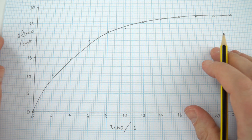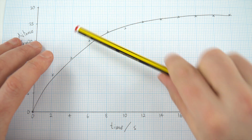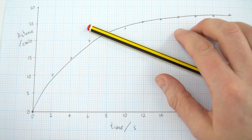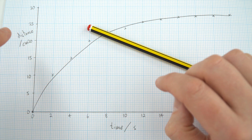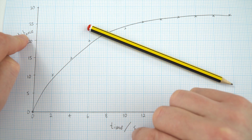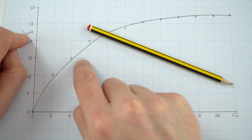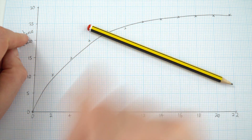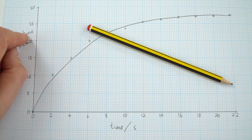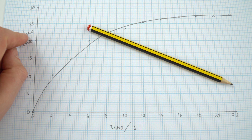So the main things for a graph are: keep it as big as possible; do it in pencil in case you make any mistakes and need to rub anything out; make sure that you label your x and y-axis with whatever you're plotting and the unit; go up in an even amount each time so you've got the same interval throughout; take care when you plot your data looking at your results table; and then do an appropriate line of best fit. If you'd like to find out a little bit more about lines of best fit, have a look at the video below this one.